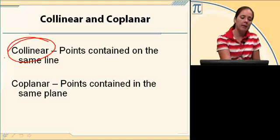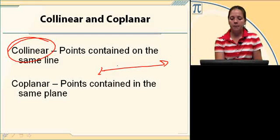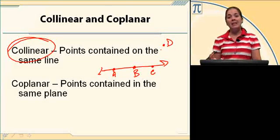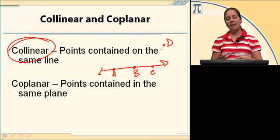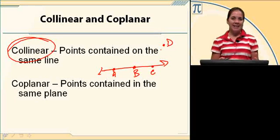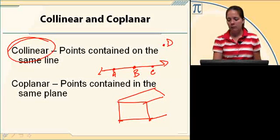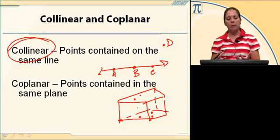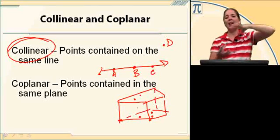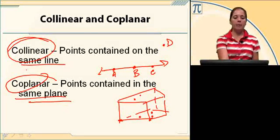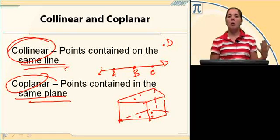Collinear and coplanar. Collinear means that there are points that are on the same line. For example, if I have points A, B, C, and then D — points A, B, and C are all collinear because they are on the same line. Point D is not collinear with A, B, and C because it is not contained on the same line. Coplanar are points that are contained in the same plane. If you imagine three points on the floor and a couple of points on the ceiling, the points on the floor are coplanar, the points on the ceiling are coplanar, but together they're not coplanar. Collinear means same line; coplanar means same plane.